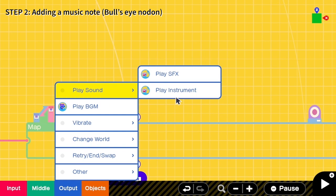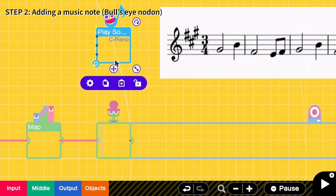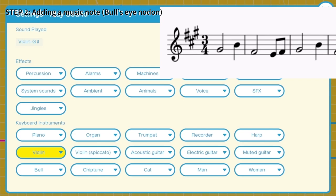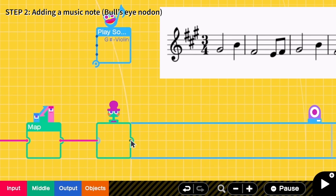Here I change it to be violin and the first note is G sharp. Close it, then I link the output of this bull's eye to be G sharp. And that's our first note.